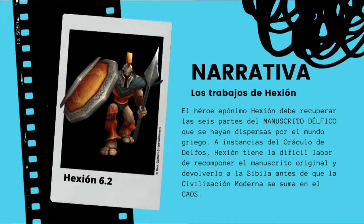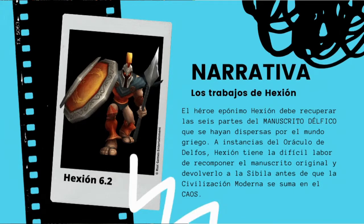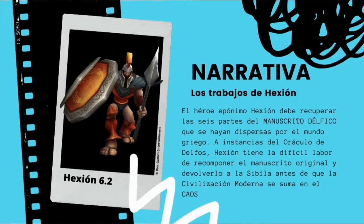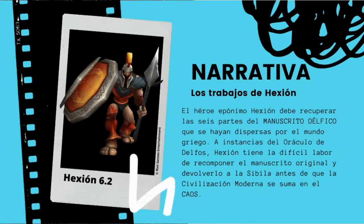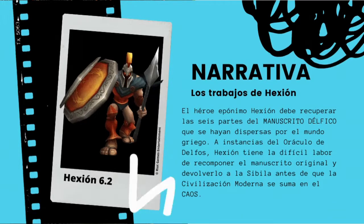Esta última parte hace referencia a la importancia que tiene el estudio de nuestras lenguas, tanto el latín como el griego, para comprender la civilización moderna. Esa es la historia que tratamos de contar. Recuerden que hasta el momento hemos cubierto 3 de las 6 etapas, y nos quedan otras 3 etapas que cubrir: 3 partes del manuscrito délfico que nos faltan por encontrar. Eso se va desarrollando en cada una de las situaciones de aprendizaje del libro. Vamos a pasar ya a lo que sería el contenido del pase de leyenda.